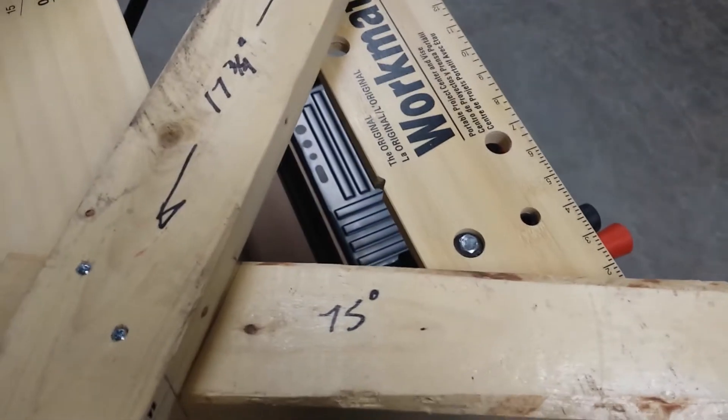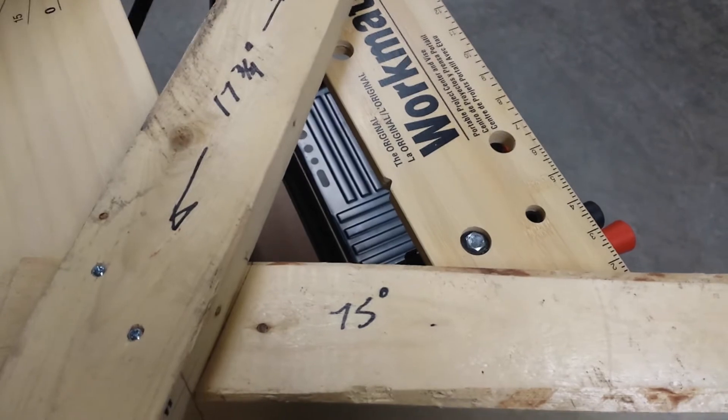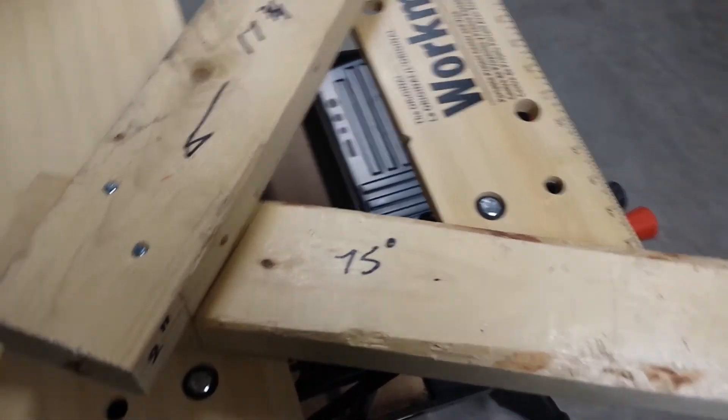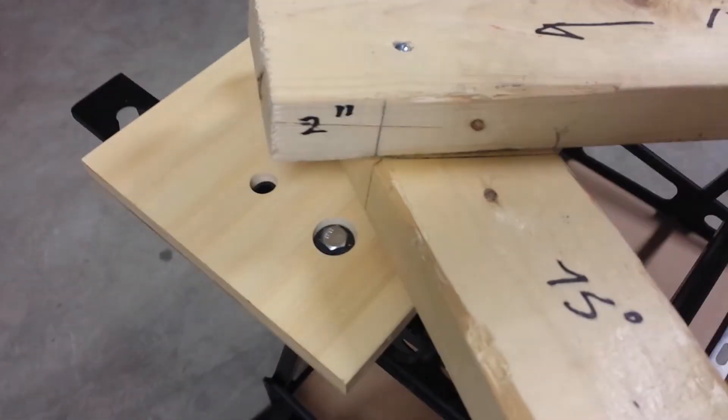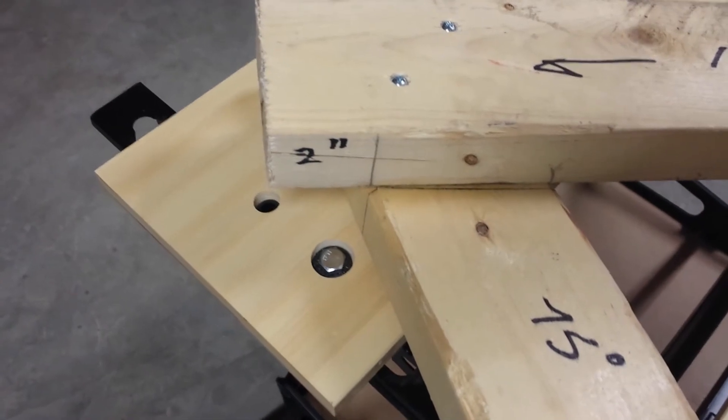The angle between the two members is 75 degrees, and as you see down here, I gave it about a 2-inch overlap.